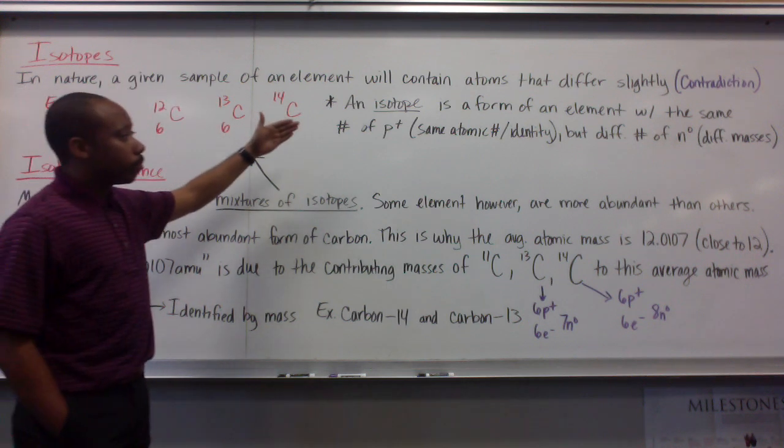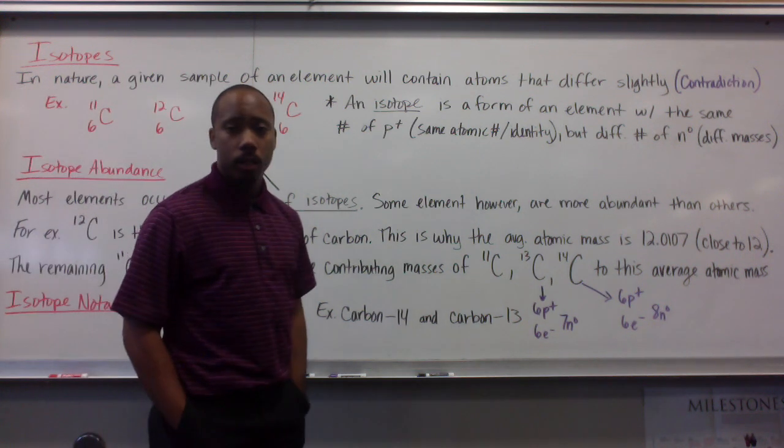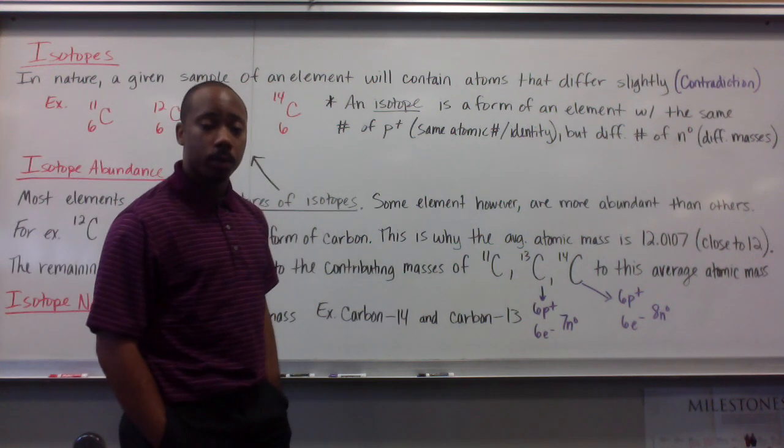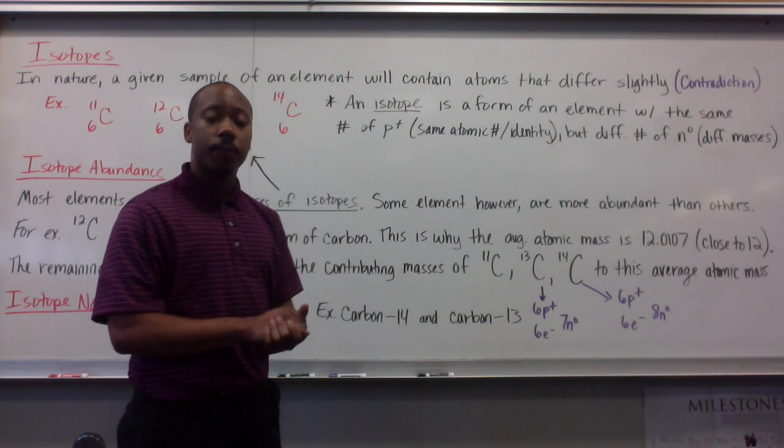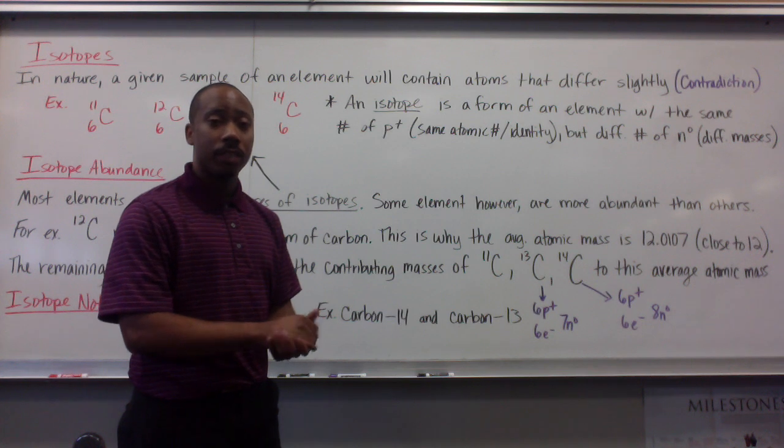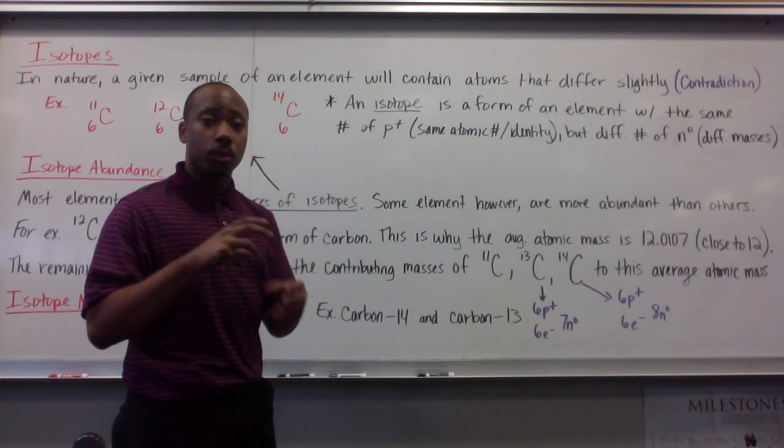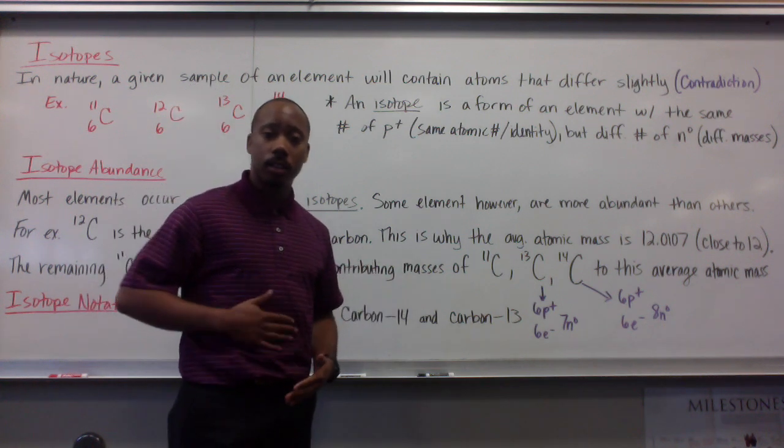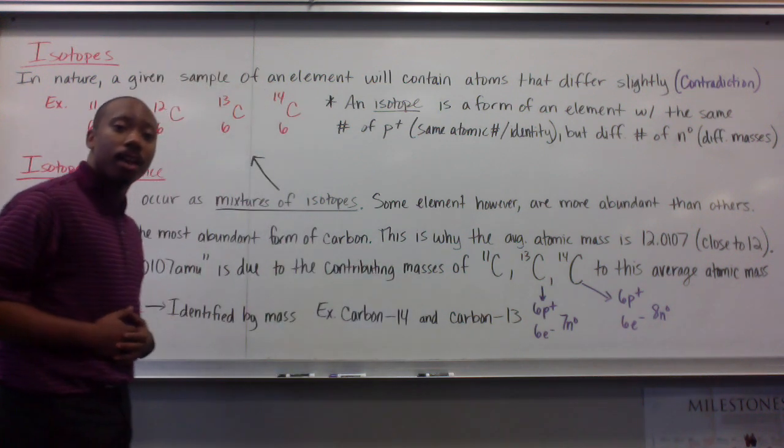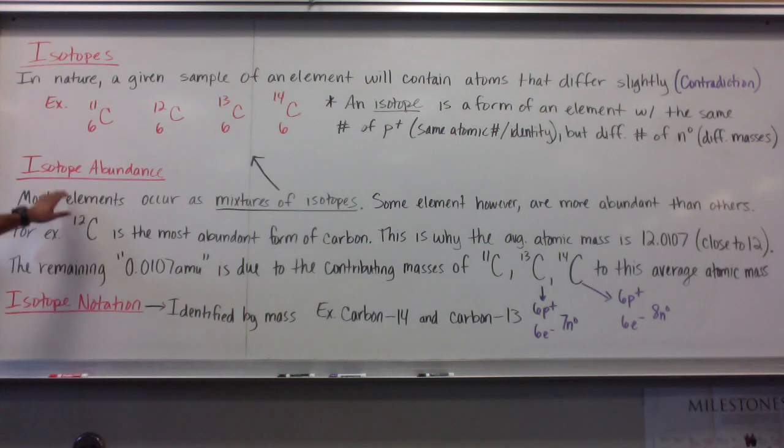Now, an isotope is a form of an element with the same number of protons, which means it has the same atomic number, the same identity, but a different number of neutrons, which gives it a different mass. So, some atoms of that element are heavier than others, like twins. You know, one has just had a little more than the other.